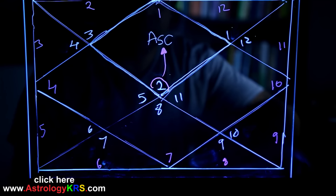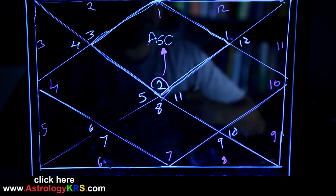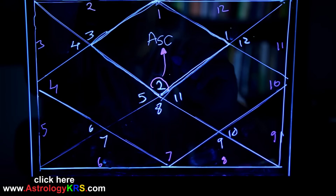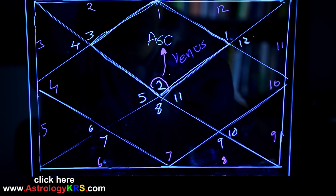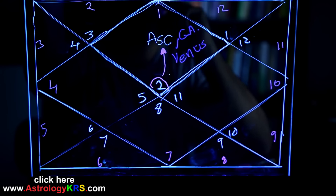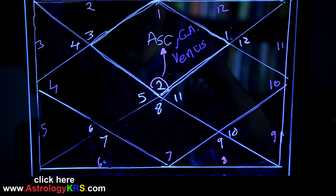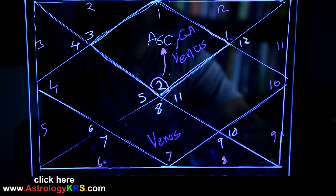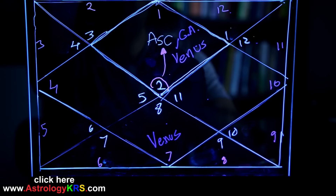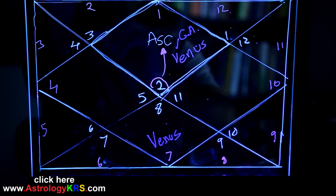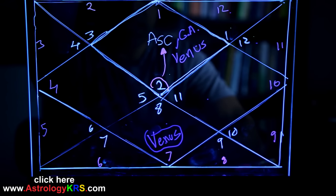I'll give you a third example. By the way, if your Graha Arudha is the ascendant itself — let's say Venus is sitting right there in the ascendant — then the Graha Arudha is the first house, that's it. So if the ascendant lord is in the ascendant, your Graha Arudha will always be the ascendant. Similarly, if Venus is in the seventh house, you count seven places away, then count seven places back, and the seventh house itself becomes the Graha Arudha.